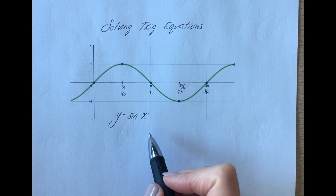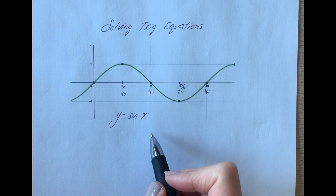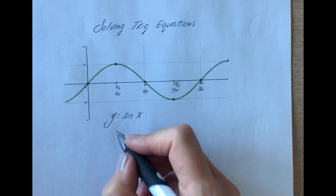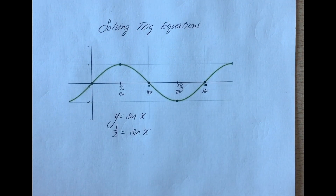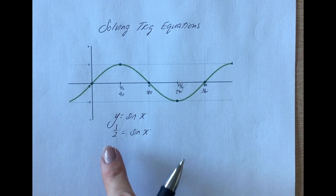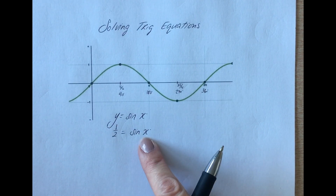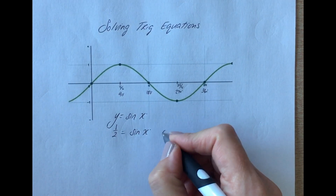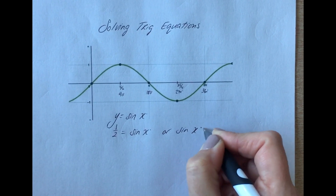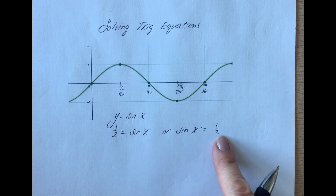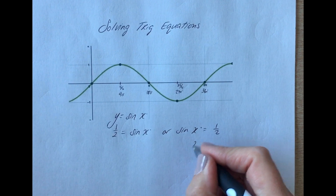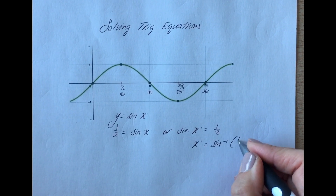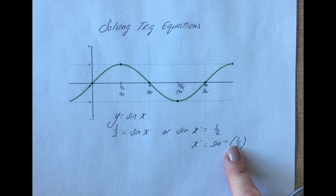When we come to looking at solving trig equations, we might have something like this. From junior cert, we've been able to solve something like this. We always know — and sometimes it's written like this — it's the same equation. With our junior cert trig, if we're looking for an angle, we do sine inverse on the calculator of that half, and that will give us the angle.